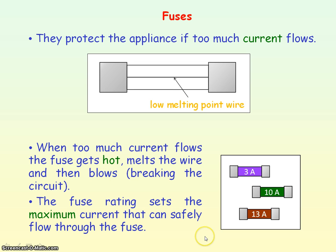If you have an appliance whose normal operating current is, say, 2.5 amps, the best fuse to use is 3 amps, just above the normal operating current.